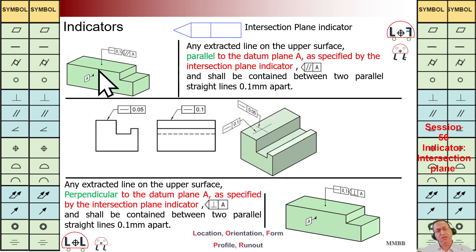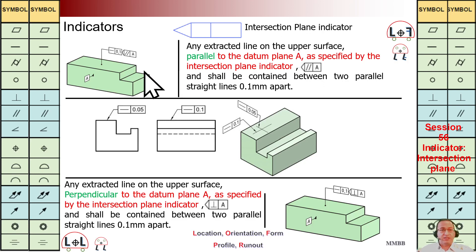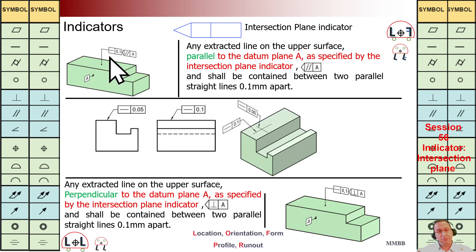Let's see another example. At the top we are going to have this straightness with Tz 0.1, and we have this intersection plane indicator parallel to A — A is here. We are going to have many planes parallel to A. We need to extract the intersection line between those parallel planes to A and this top surface. The extracted line should be between two parallel lines with this Tz 0.1.